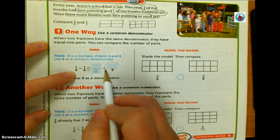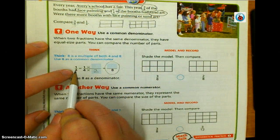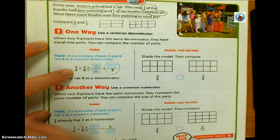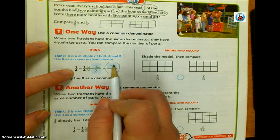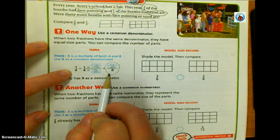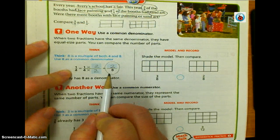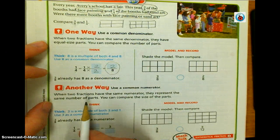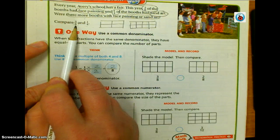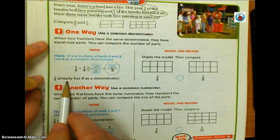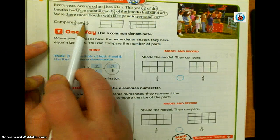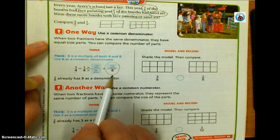If I want my fraction to be equivalent to what I started with, I need to multiply the denominator and the numerator by the same thing. So one times two gives me the numerator — one-fourth is equal to two-eighths; those are equivalent fractions. Do I need to do anything to three-eighths to get an eight in the denominator? Nope, it's already there. So now instead of comparing three-eighths and one-fourth, I'm comparing three-eighths and two-eighths.